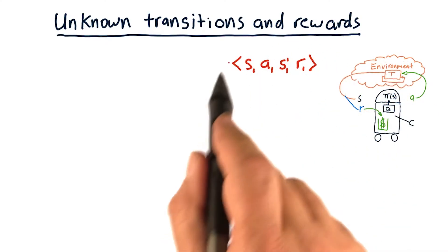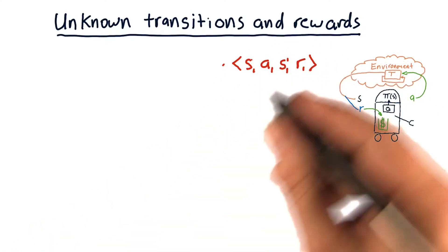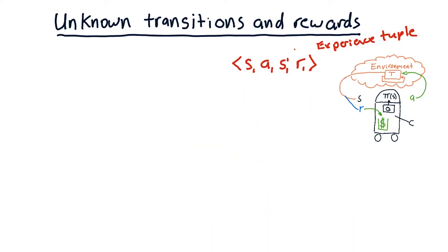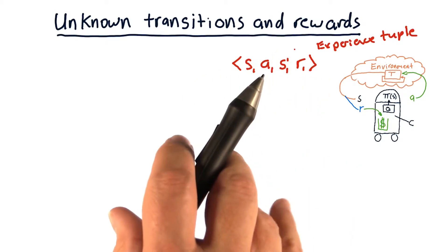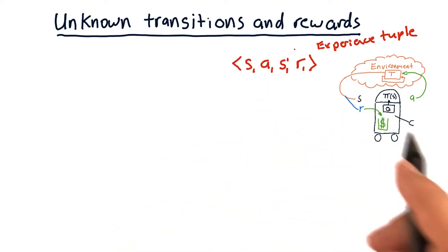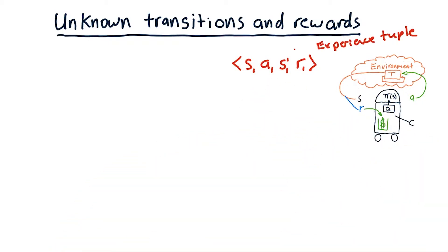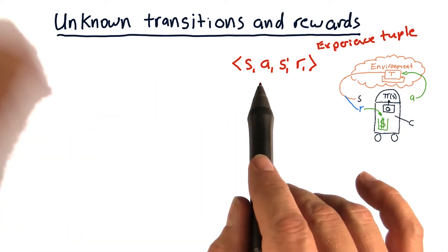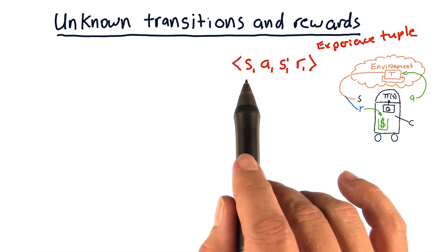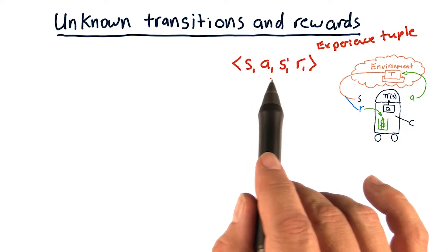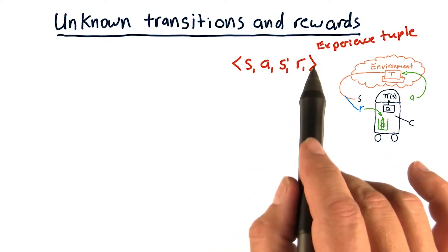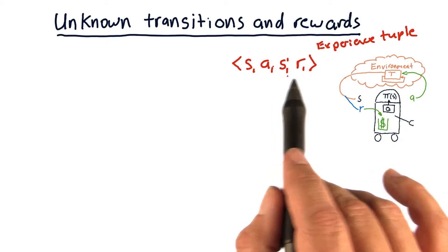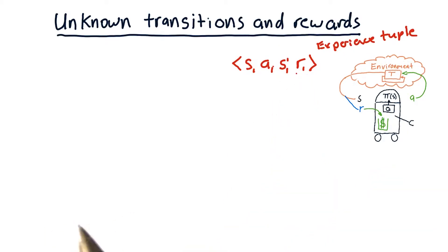This is an experience tuple. It's very similar to experience tuples in regression learning, where we have an x and a y paired together — when you observe this x, you see this y. Here we're saying when you observe state S1, you take action A1, you end up in this new state S1 prime, and get reward R1.